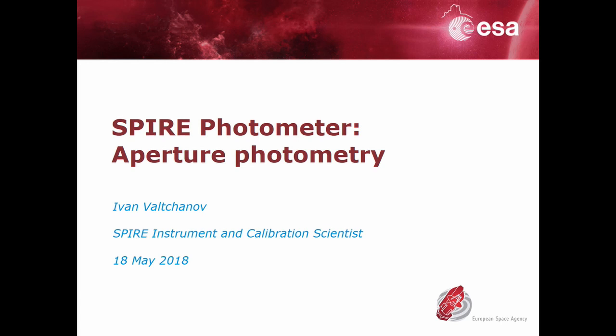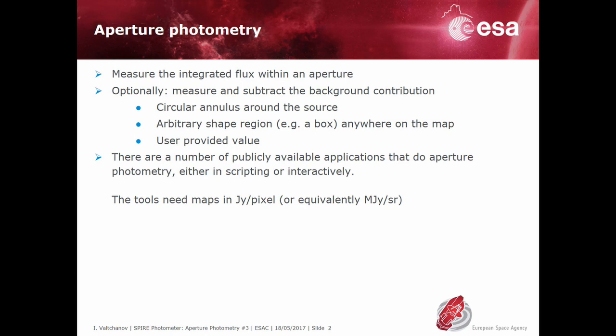In this Herschel Science Center short video tutorial we shall demonstrate briefly how to do aperture photometry on SPIRE maps. Aperture photometry measures the integrated flux density within a user-provided region — usually this region is circular. The measured flux can be corrected for the background, which can be estimated from an annulus around the source, from another region in the image — circular, rectangular, or another shape — or it can be a user-provided value.